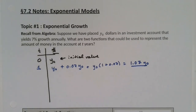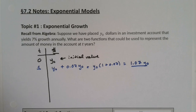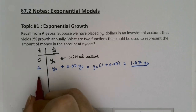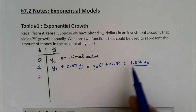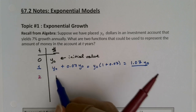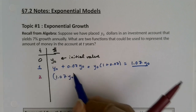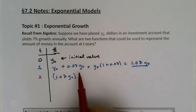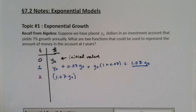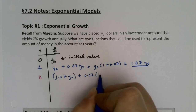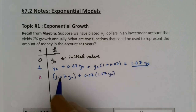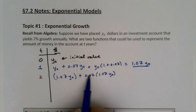Now for the next year — year two — it'd be the same thing: 1.07 Y-zero for what we had before, but again we would multiply that by 1.07. Or equivalently, it's 1.07 Y-zero plus another 0.07 times 1.07 Y-zero — same idea. You have what you had before and then another 0.07 on top of that.